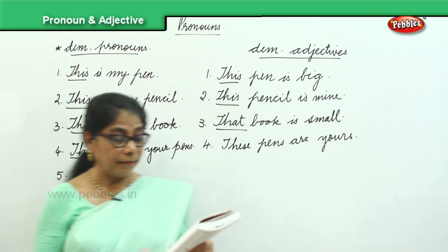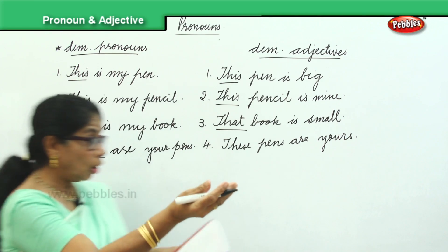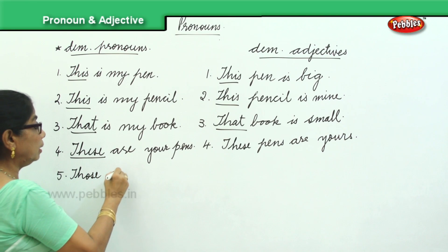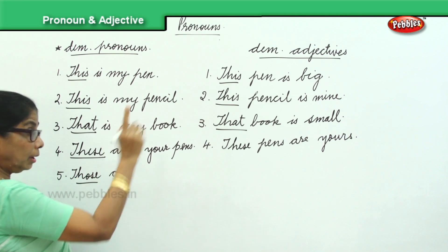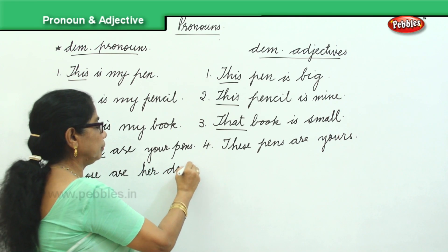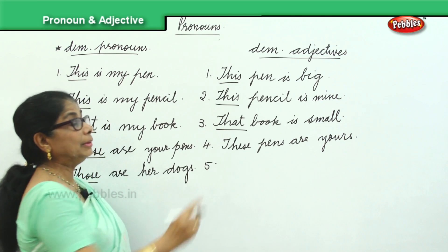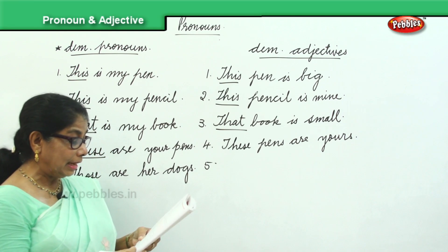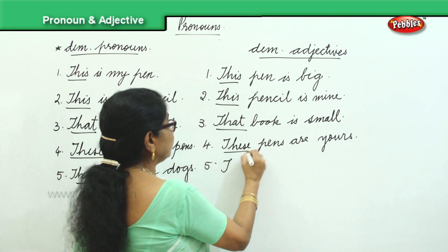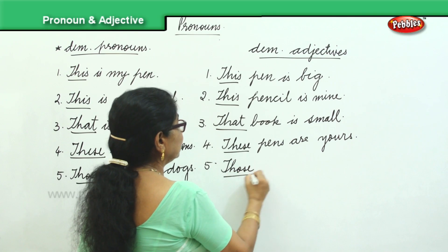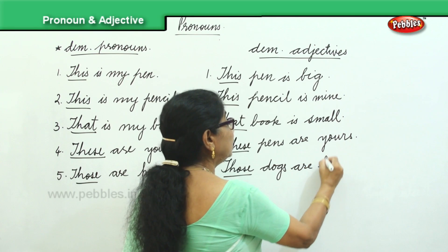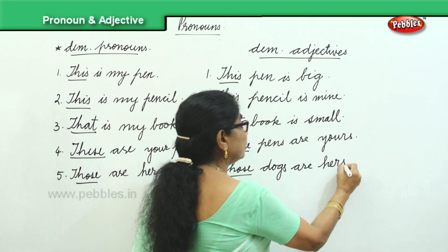Then we have 'Those are her dogs' — that is the demonstrative pronoun. And when it is demonstrative adjective, we will say 'Those dogs are hers.'